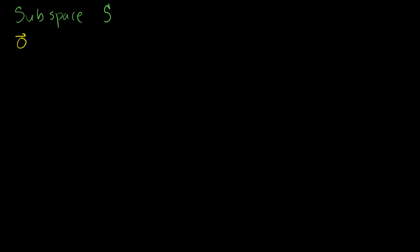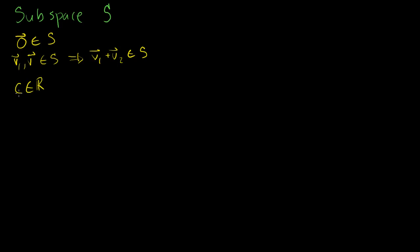The zero vector is a member of S — so it contains the zero vector. That if v1 and v2 are both members of my subspace, then v1 plus v2 is also a member of my subspace. So that's just saying that the subspace is closed under addition — you can add any two members and get another member. And then the last requirement is that subspaces are closed under scalar multiplication. So if c is a real number and v1 is a member of my subspace, then c times v1 is also a member of the subspace.